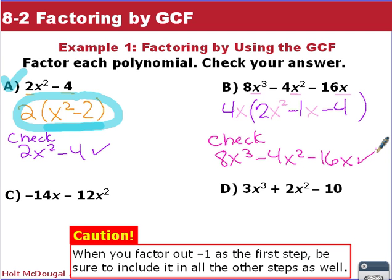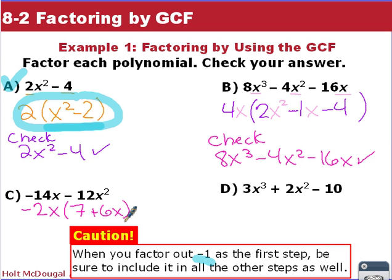For example C, we have negative 14x minus 12x². Note the caution: when you factor out a negative as a first step, be sure it's included in all subsequent steps. Both 14 and 12 are even and each term has an x, so we factor out negative 2x. That gives: negative 2x times 7 is negative 14x, and negative 2x times negative 6x is positive 12... wait — negative 2x times 6x gives negative 12x². Checking our work, we get negative 14x minus 12x², back to where we started. Keep the negative carried through and make sure signs inside change accordingly.